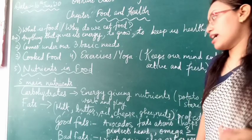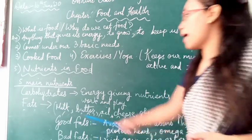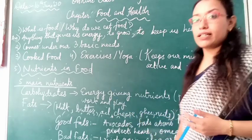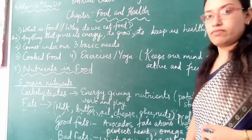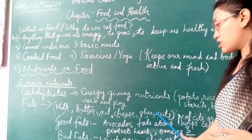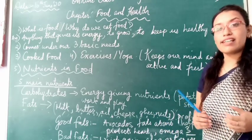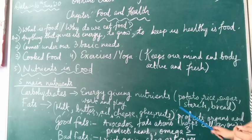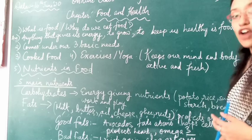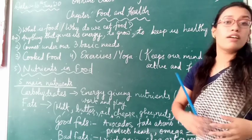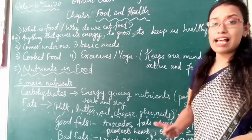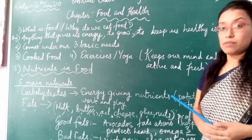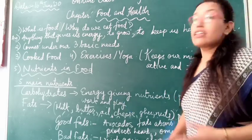Now let's come to fats. What is fat and what are the foods that give us fat? Milk, butter, oil, cheese, ghee, and nuts. Nuts and ghee are very important — it is said that some of these foods help you be more intelligent. Fats help to protect organs like your heart and kidneys. This food helps us in giving energy and also in saving us.